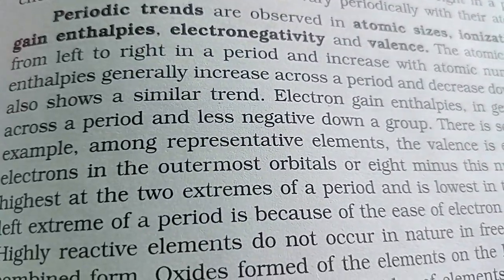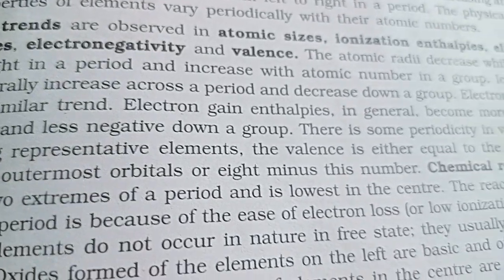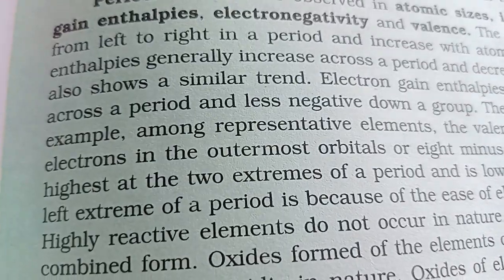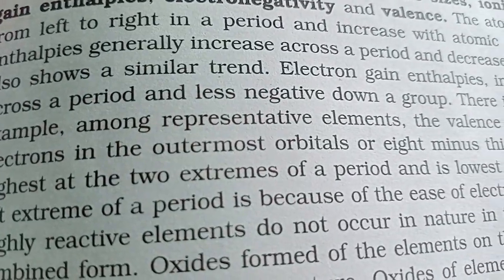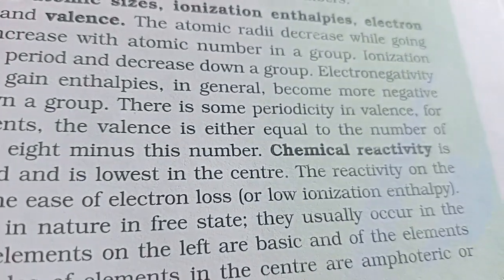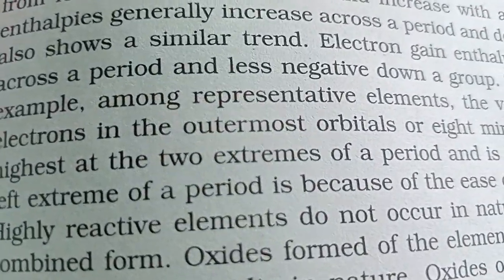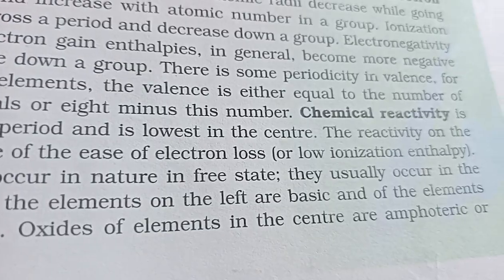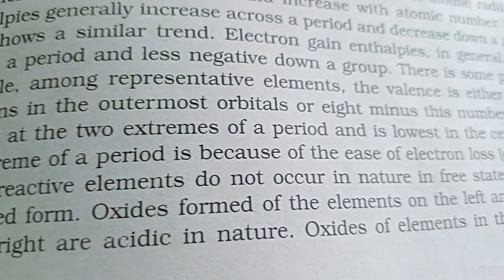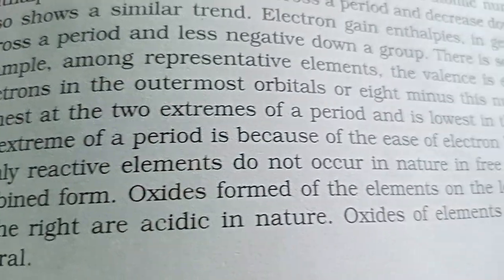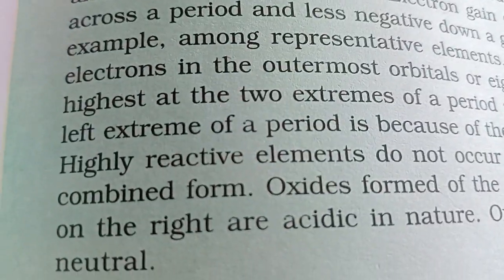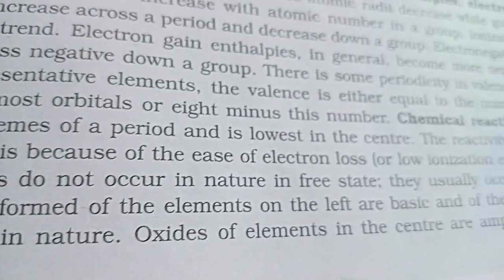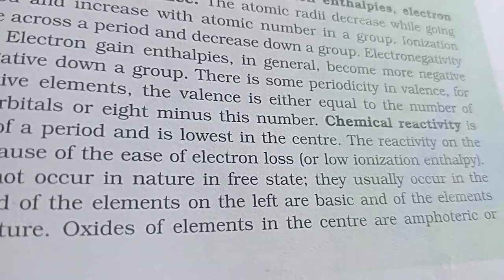Electronegativity also shows a similar trend. Electron gain enthalpies in general become more negative across a period and less negative down a group. There is some periodicity in valency; for example, among representative elements, the valency is either equal to the number of electrons in the outermost orbitals or 8 minus this number. Chemical reactivity is highest at the two extremes of a period and lowest in the center.